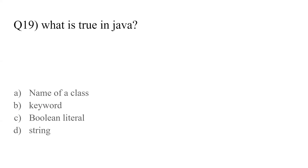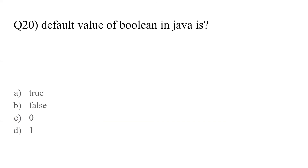Question number nineteen: what is 'true' in Java — name of a class, a keyword, a boolean literal, or a string? The answer is C — true is a boolean literal in Java. Boolean literal has two values: false and true. Question number twenty: the default value of boolean in Java is true, false, 0 or 1? Many people make a mistake and go with true, but the answer is false. The default value of boolean in Java is false.